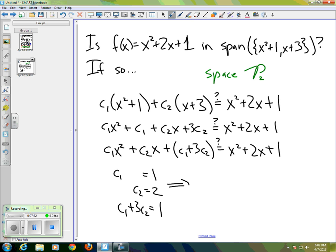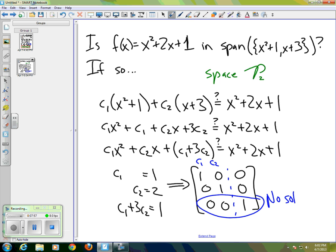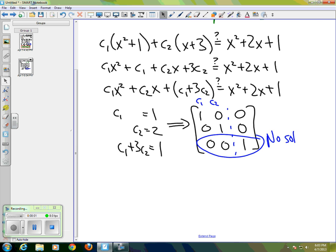And then c1 plus 3c2 equals 1. And again, if we put that into augmented matrix form, and then row reduce it, what we have is [1, 0, 0; 0, 1, 0; 0, 0, 1]. And remembering that this represents a system of equations in the unknown c1 and c2, we can see from the last row that we have no solution.